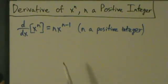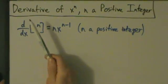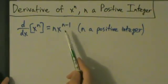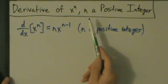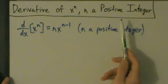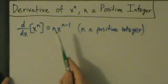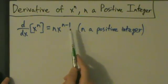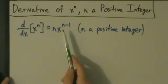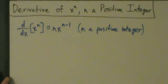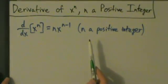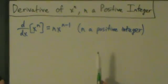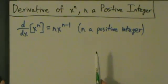In this video we're going to show that the derivative of x to the n equals nx to the n minus 1, where n represents any positive integer. You may already know that this is actually true if n is any number at all, but the proof we're going to do only applies to positive integers. The more general case is going to come a little bit later in another video.